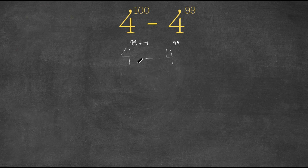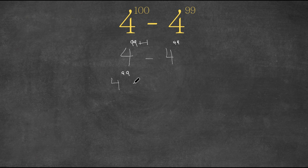So what we're going to do to this 4 to the power of 99 plus 1 is we're going to rewrite this as 4 to the power of 99 times 4 to the power of 1, minus 4 to the power of 99. We're keeping that the same.